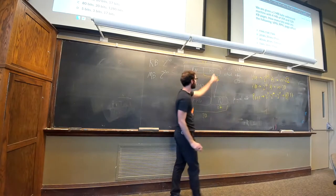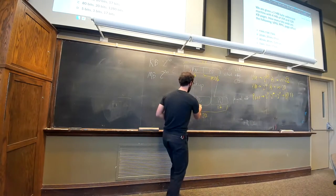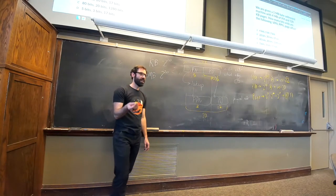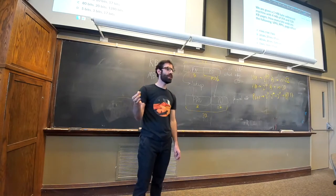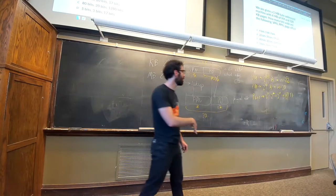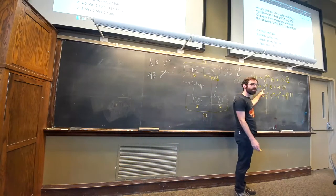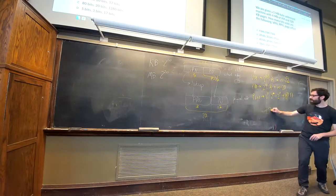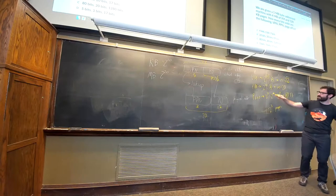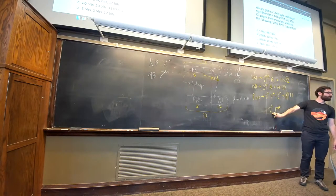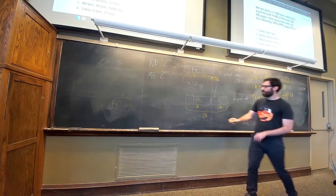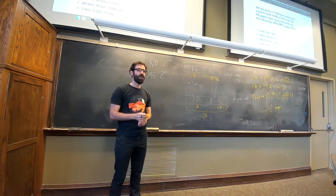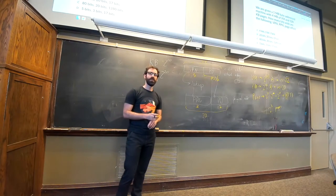As a check: how many 128-kilobyte pages fit into physical memory? There are 2^17 bytes per page and 2^20 bytes total, so 2^20 / 2^17 = 2^3 pages. Having three bits to specify different pages is consistent with that.